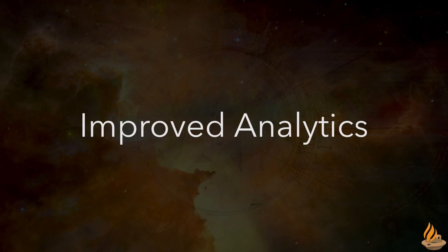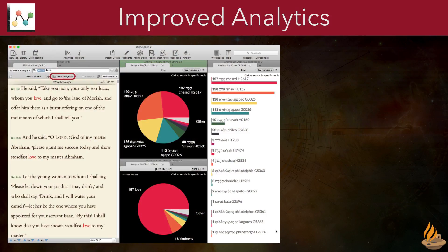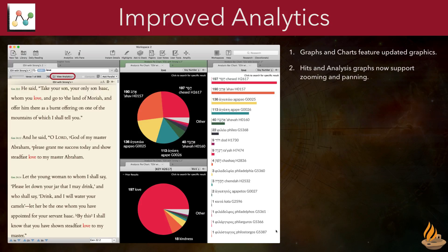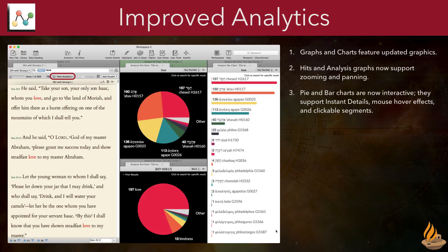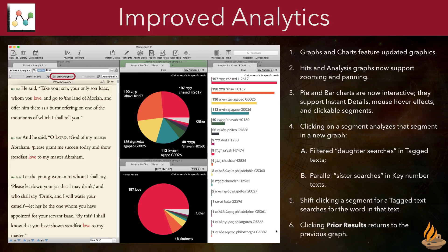Improved Analytics. Accordance 12's improved analytics allow us to dig deeper than ever into our search results. Graphs and charts both feature updated graphics. Hits and analysis graphs now support zooming and panning. Pie and bar charts are now interactive — they support instant details, mouse hover effects, and clickable segments. Clicking on a segment analyzes that segment in a new graph, with filtered daughter searches in tagged texts or parallel sister searches in key number texts. Shift-clicking a segment for a tagged text searches for the word in that text. And finally, clicking Prior Results returns to the previous graph.